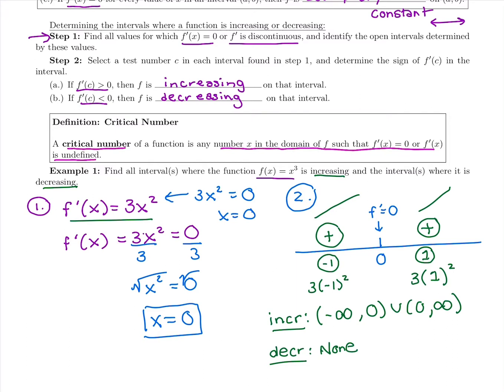So for this one, our critical number is at x equals 0. That's what made the derivative 0, made f' equals 0, and it can go into the original function. That's the two things we would check to be a critical number. Does it make the derivative 0 and does it go into the original function?